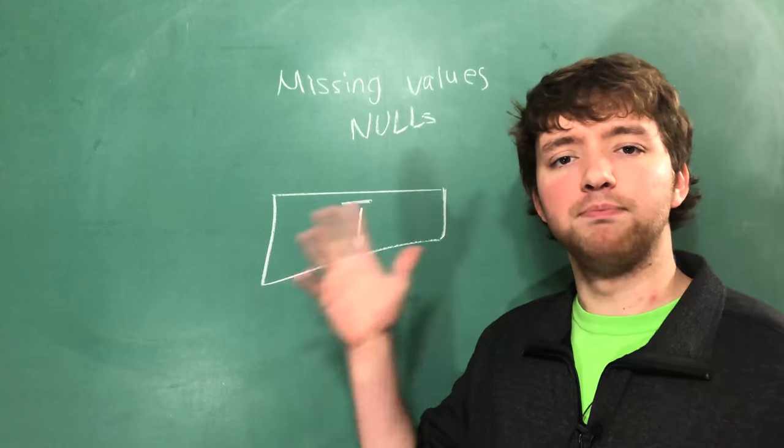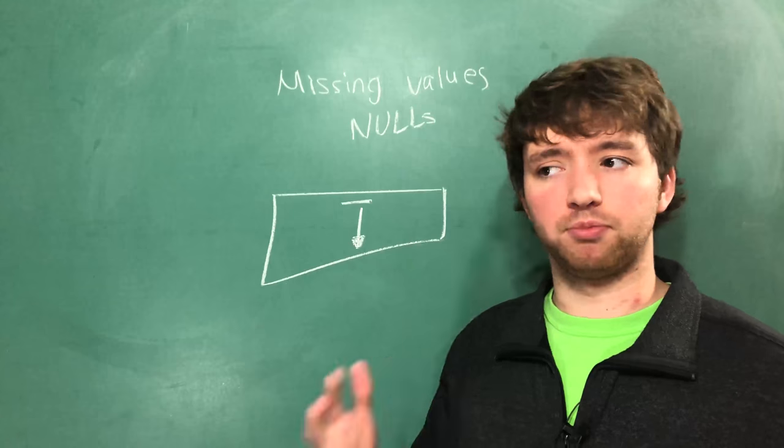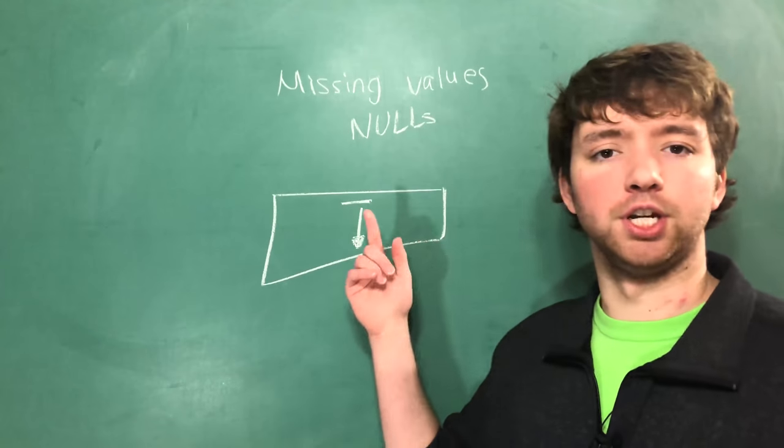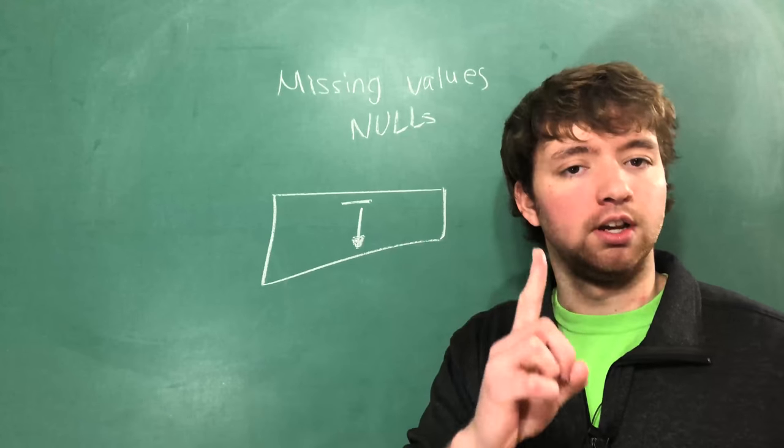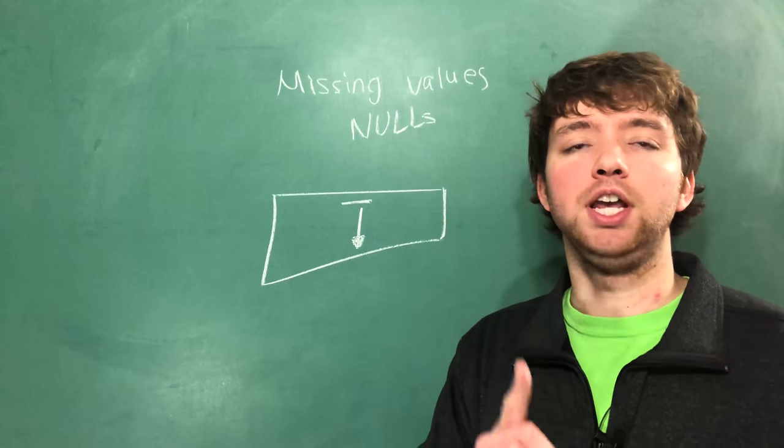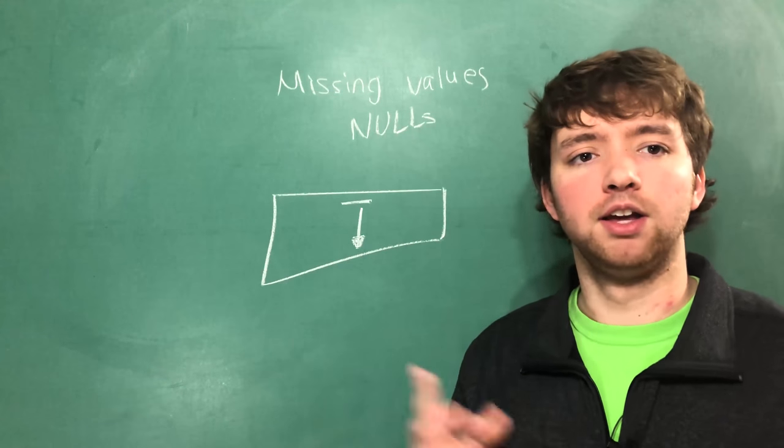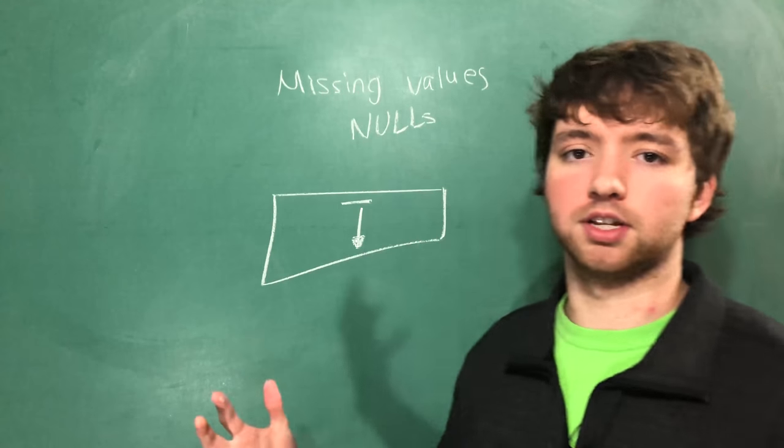I mean think about it. If we had a million people and we're trying to figure out if people are likely to have diabetes, and we have a feature in here and only one person has a value for that feature and everyone else doesn't have anything for that. Well, that's not going to contribute a whole lot to our process.